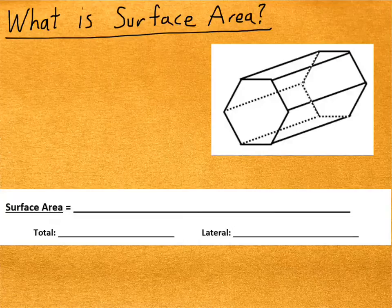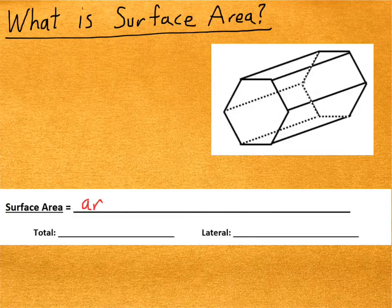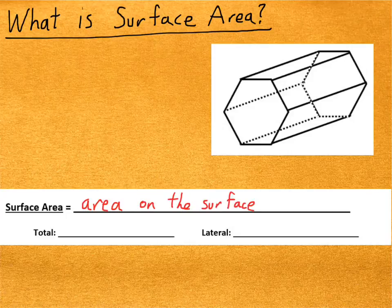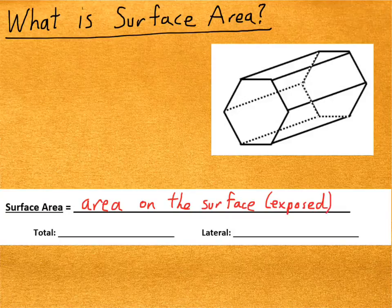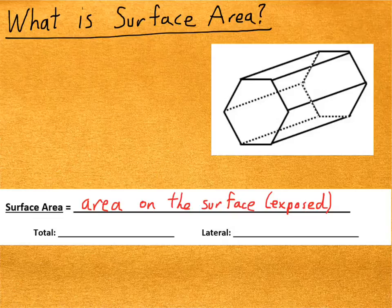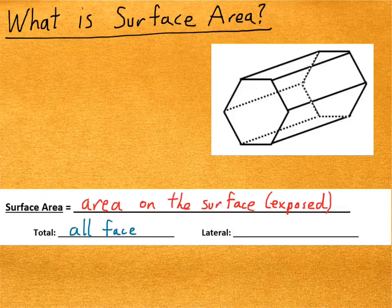Since this is our first video about surface area, let's just take a moment to talk about what it is. It's pretty straightforward - it's the area on the surface. But what do we mean by that? It's the area that's exposed to the outside. So if I take the area of all of the different faces, all the surfaces of the prism there, then I would have the total surface area. That's the first kind of surface area.